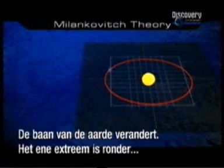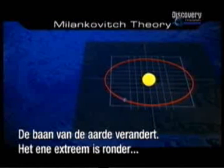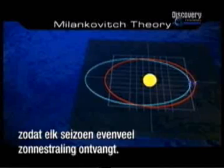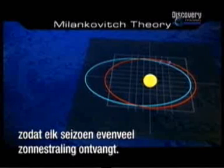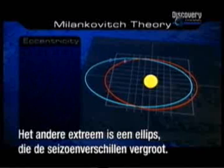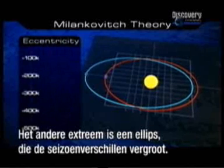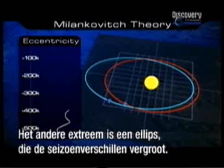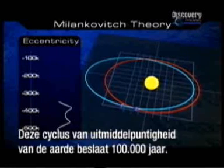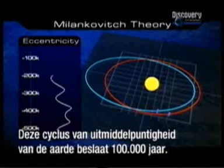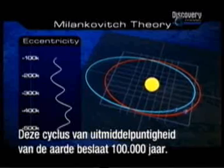The shape of the Earth's orbit changes. At one extreme, the orbit is more circular, so that each season receives about the same amount of insolation. At the other extreme, the orbital ellipse is stretched longer, exaggerating the differences between the seasons. The eccentricity of Earth's orbit proceeds through a long cycle which takes 100,000 years.